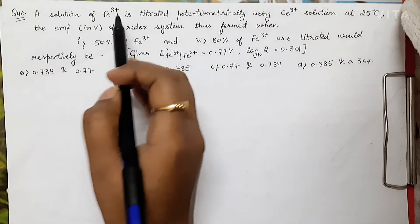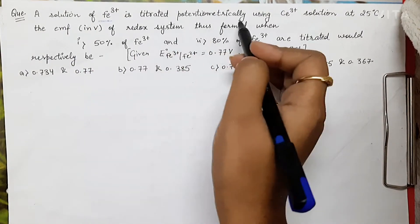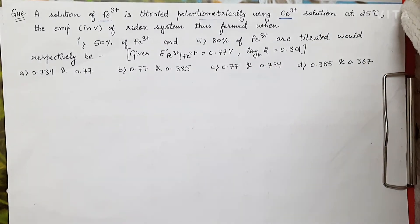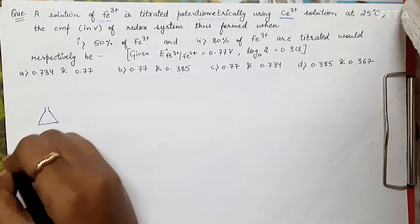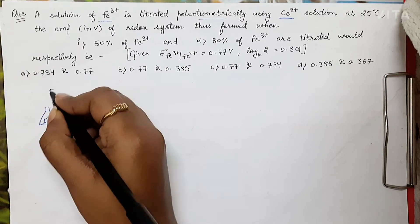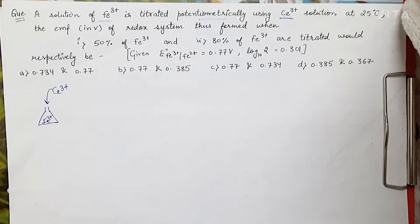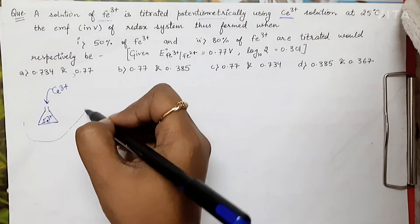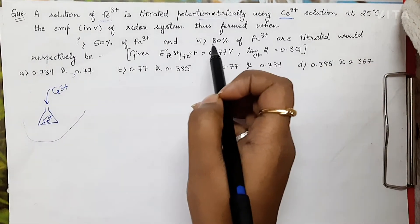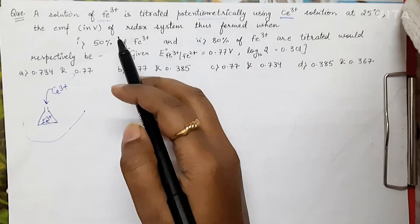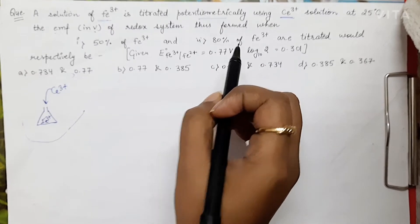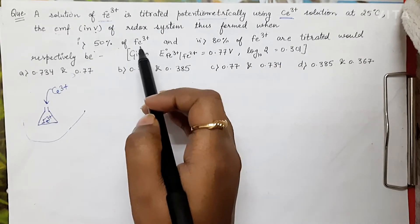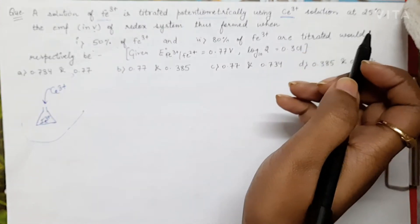The question says that a solution of Fe³⁺ is titrated potentiometrically using Ce³⁺ solution. Basically, in the titration flask we will be having a solution of Fe³⁺, and Ce³⁺ solution will be added to this. This is a redox system. We have to find the EMF when 50% of Fe³⁺ is getting titrated, and second when 80% of Fe³⁺ is getting titrated.